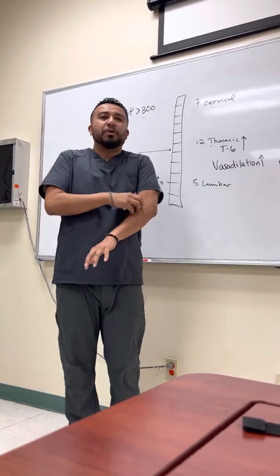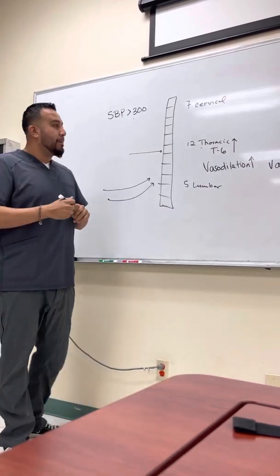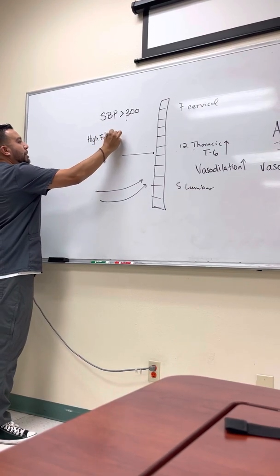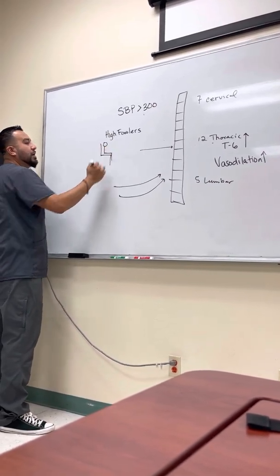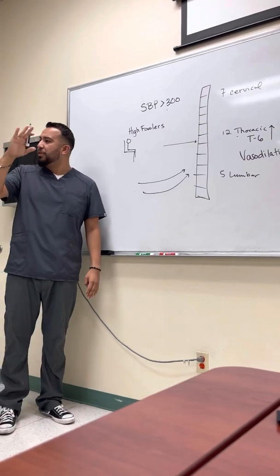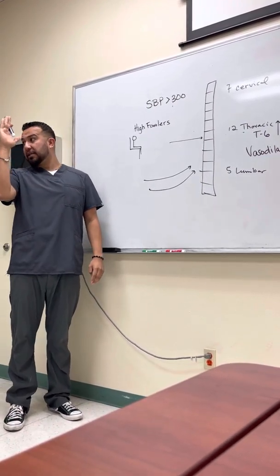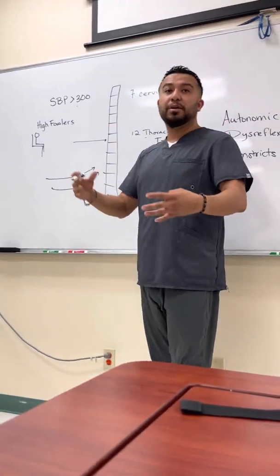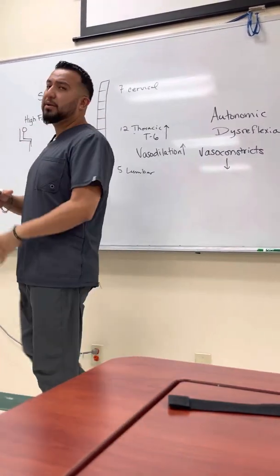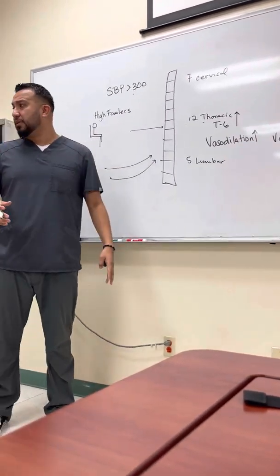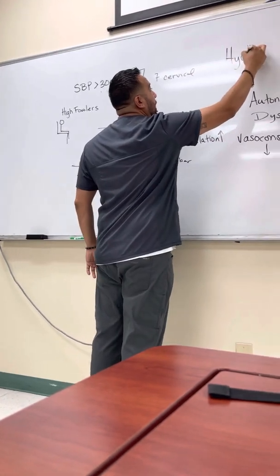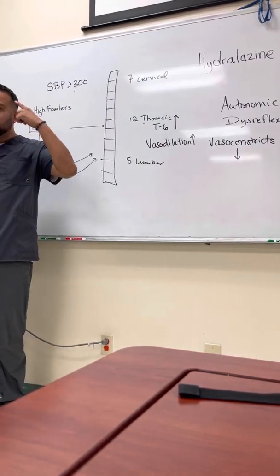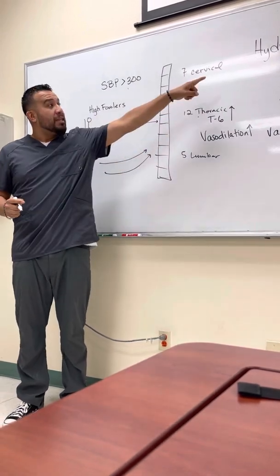The patient will start developing goosebumps, their face will become flushed, and they'll have a headache. We have to sit the patient in a high Fowler's position — as high as possible — to prevent pressure building up in the brain. We give medications that alleviate blood pressure instantaneously; not beta blockers, calcium channel blockers, or ACE inhibitors, but powerful ones like hydralazine. Hydralazine is a centrally acting vasodilator that tells your vessels to open up — it doesn't block anything, it just says open up.